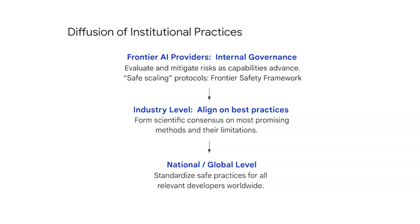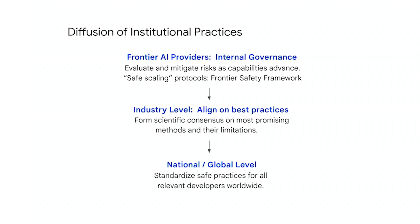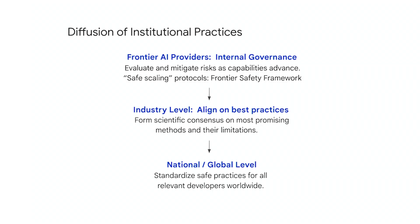This section has given you a high-level description of institutional AGI safety. A key dimension is how we diffuse institutional practices — for example, things like safe scaling protocols or our frontier safety framework. How do we ensure that those practices, as we evolve and update them, spread to all relevant global actors? We think about aligning on best practices at the industry level and then ensuring these are diffused at the national and global levels as well. In the next section, my colleague Lewis Ho will talk more about Google DeepMind's own frontier safety framework. Thank you very much.